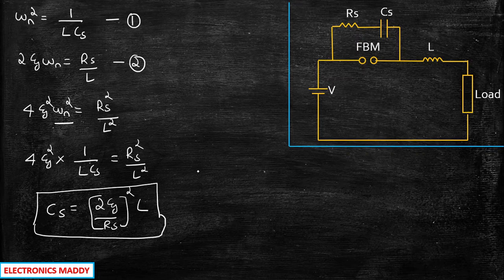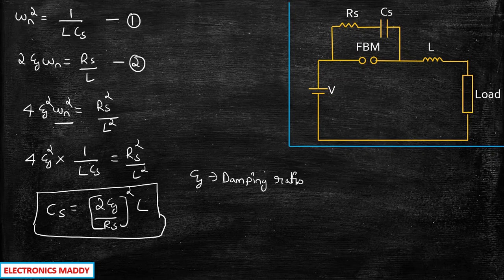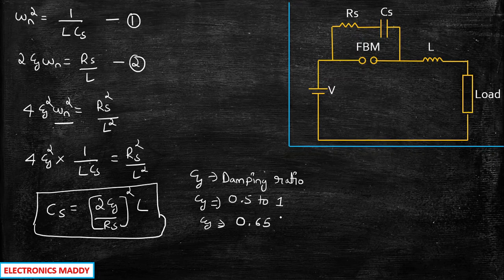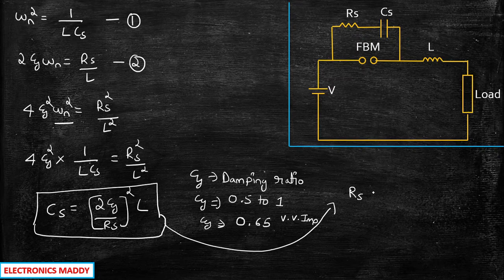So we have found the value of RS, the value of L, and the value of CS. Here, ζ is called the damping ratio. Based on a suitable value of damping ratio, optimum performance of the circuit can be achieved. Generally, ζ ranges from 0.5 to 1, but for optimum value — if the problem does not mention ζ — you can take it as 0.65. This is a very, very important point. RS can also be written as RS = 2ζ × √(L/C).